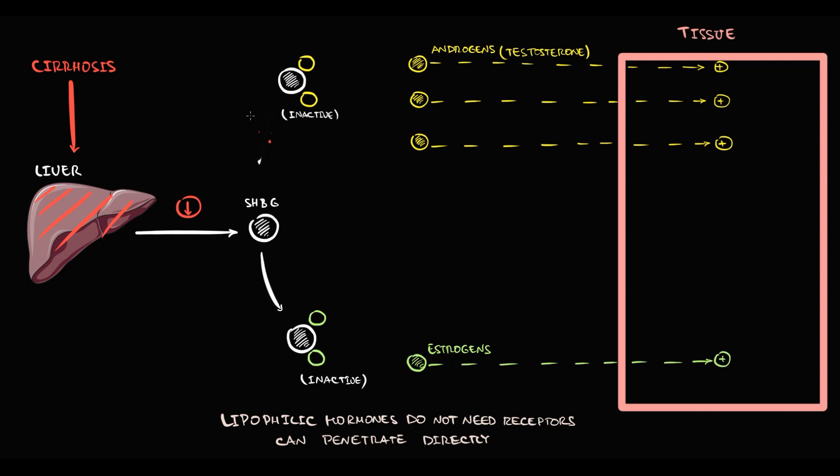And now, with decreasing sex hormone binding globulin, we do not have proteins to keep sex hormones in reserve. So they become free. And free means that they become active. The problem with active lipophilic hormones is that we cannot control them.